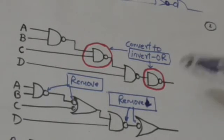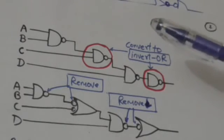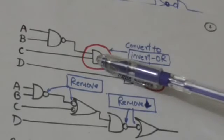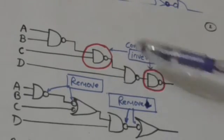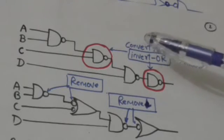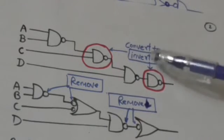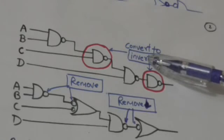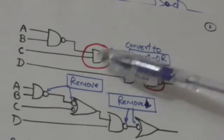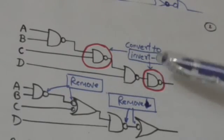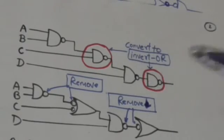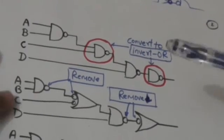We will start from the last level. In alternate levels of gates, the symbol of the NAND gate will be converted from AND-invert to invert-OR. Right now their symbol is AND-invert, so we will convert them into invert-OR. It would become like this — these gates are now shown as invert-OR symbols.